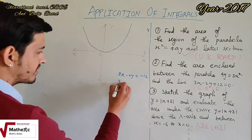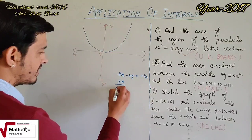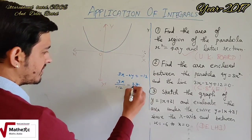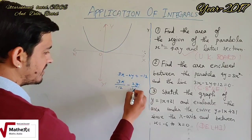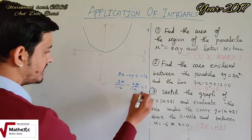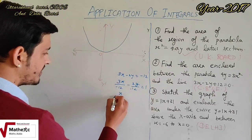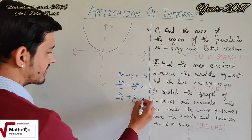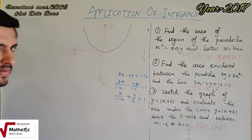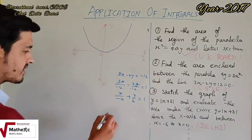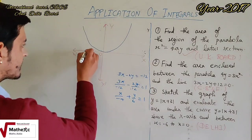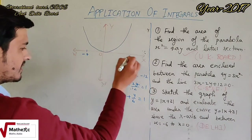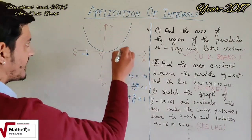Rewriting the line: -12 upon 3x upon -12, minus 2y upon -12 → x/(-4) + y/6 = 1. So the x-intercept is -4 and the y-intercept is 6.